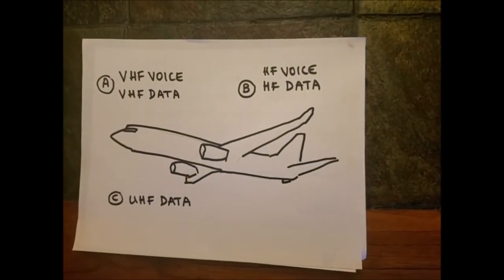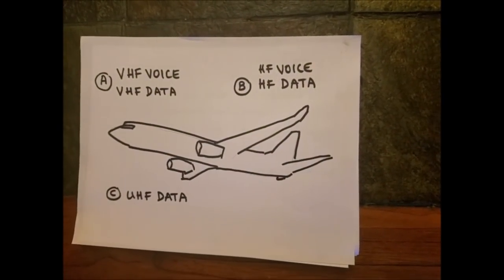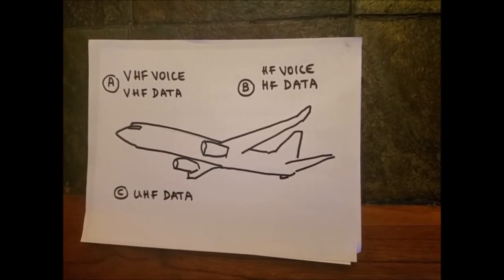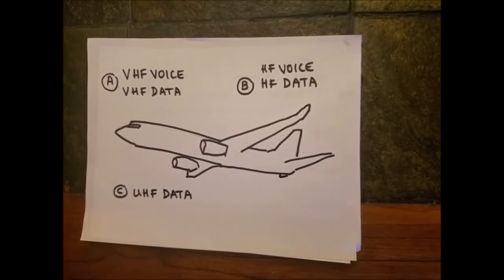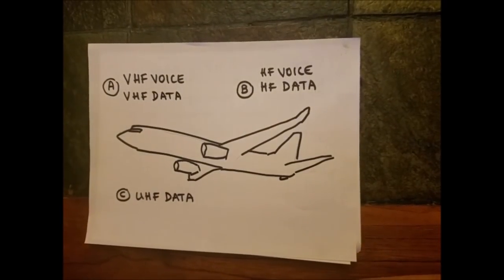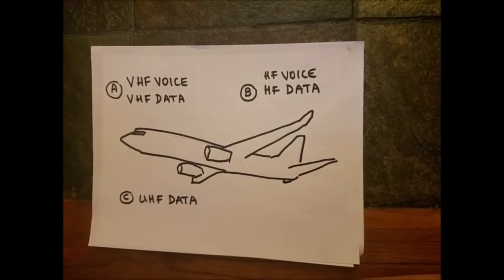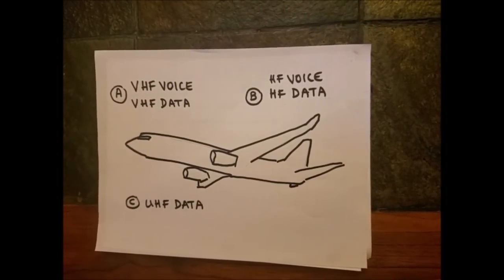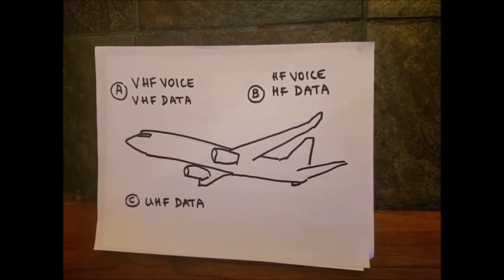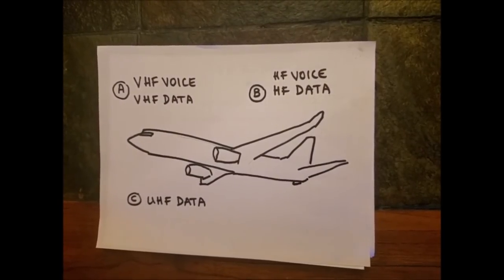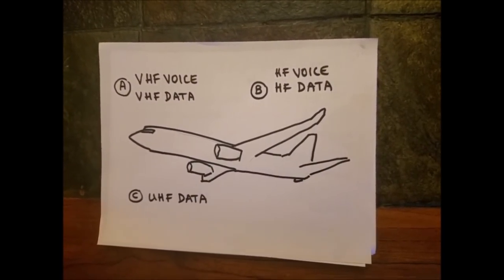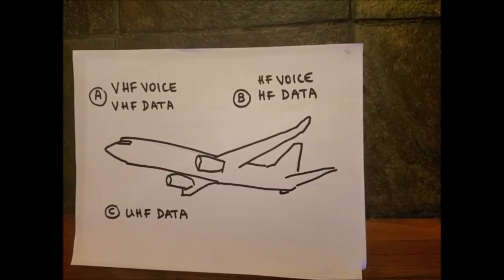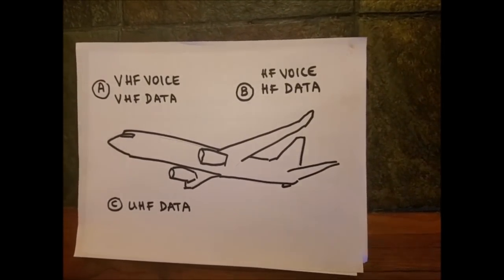There's a lot of communication going on in airplanes, and I've divided them into three sections: A, B, and C. A being VHF voice and VHF data, B being HF voice and HF data, and C being UHF data. And if you don't know what any of these means, don't worry — I will explain them and go through them one by one. I'm very excited to start, so without further ado, let's get started.